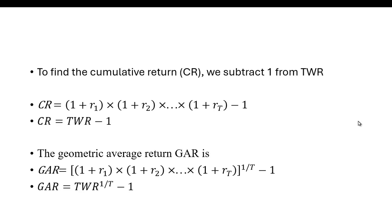Because we're multiplying here to average them, we raise it to the 1 over t power and then we have to subtract 1 from it. So the geometric average return is the terminal wealth ratio raised to the 1 over t power minus 1.